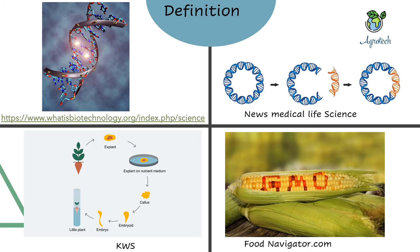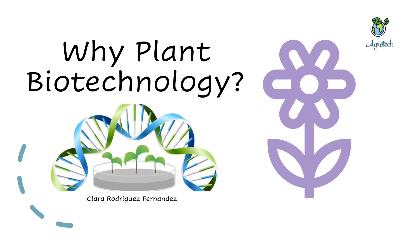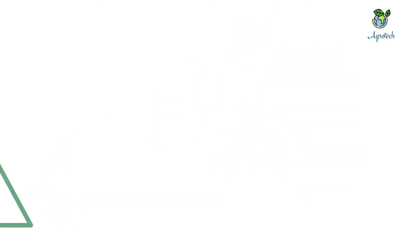Plant biotechnology helps to develop new varieties or new traits in a plant. That includes genetic modification, transformation, or any kind of modification in the gene or chromosome, and it helps to develop new kinds of traits in a crop or plant — including transgenics.